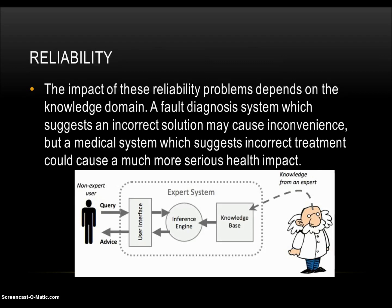The impact of these reliability problems depends on the knowledge domain. A fault diagnosis system which suggests an incorrect solution may cause inconvenience, but a medical system which suggests incorrect treatment could cause a much more serious health impact. However, the key problem with expert systems is that they are dependent on the rules in their knowledge base, which cover only a small amount of knowledge, and they are unable to address problems outside of this domain or exceptions to rules. This makes them unsuitable for some problems.